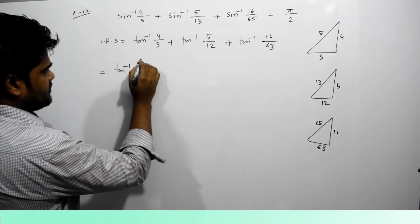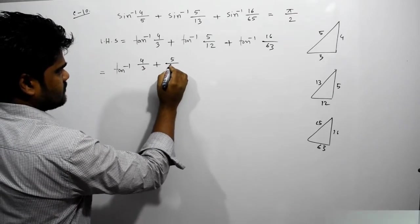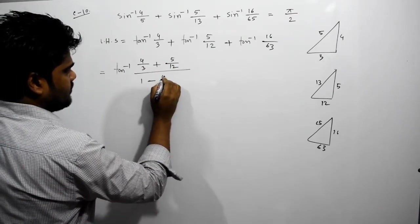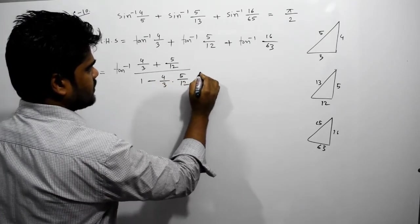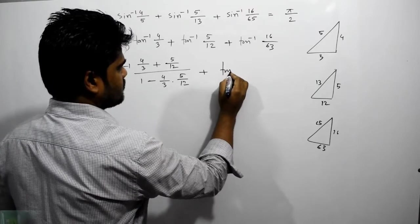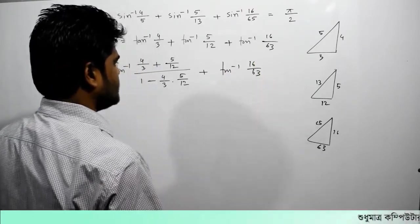a plus b divided by 1 minus ab. 4 by 3, 5 by 12, so the other one is tan inverse 16 by 63. This is 3 and this will be 33.